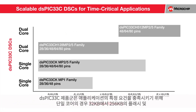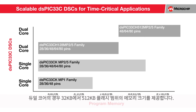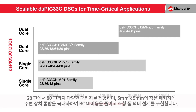The dsPIC33C families offer memory sizes that range from 32 to 256 kilobytes of flash in single core variants and 32 to 512 kilobytes of flash in dual core variants to meet your application's specific requirements. Offering a range of packages starting from 28 to 80 pins, they provide maximum peripheral integration in packages as small as 5 by 5 millimeters to reduce BOM cost and implement smaller form factor designs.